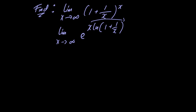This is just an easier form to work with for this particular problem. Since the exponential function is continuous, we can move the limit inside of it. So we're going to have e raised to the limit as x approaches infinity of x multiplied by the natural logarithm of 1 plus 1 over x.